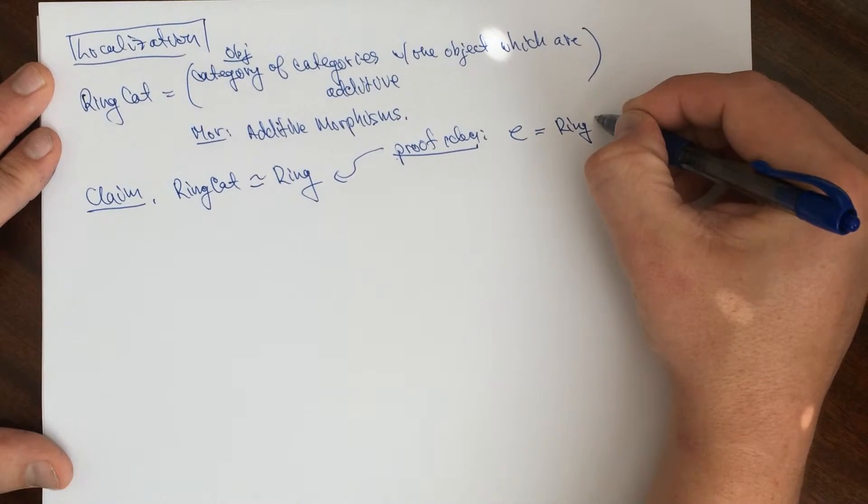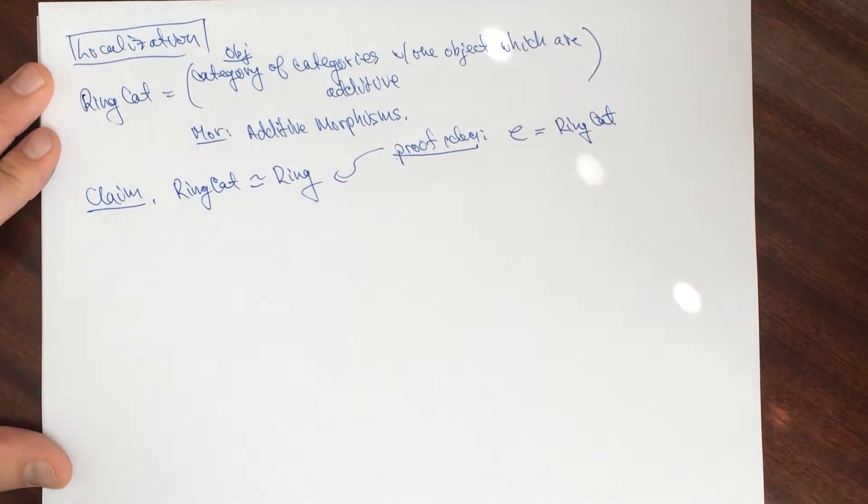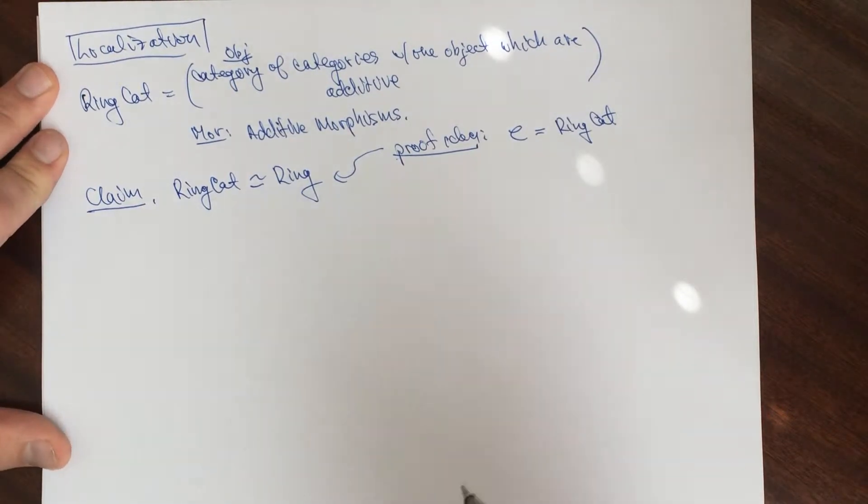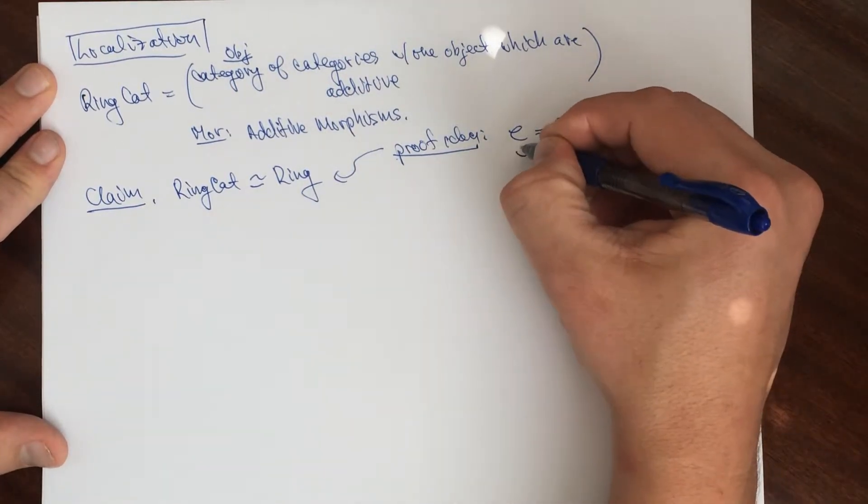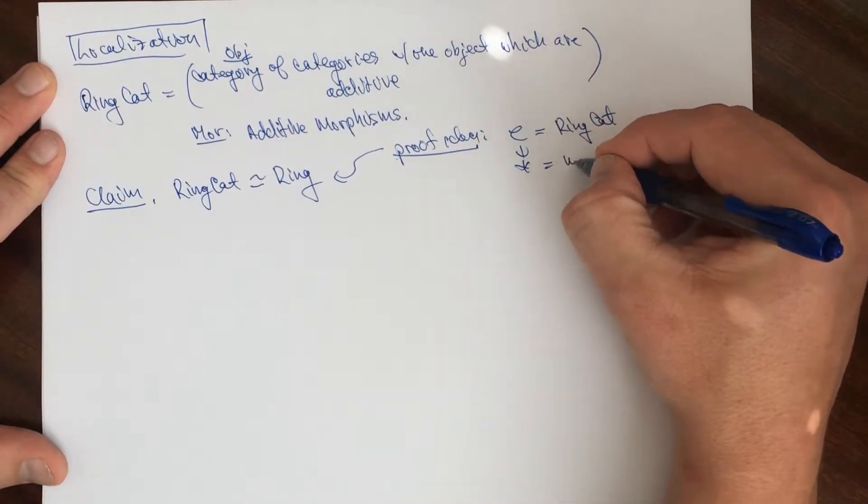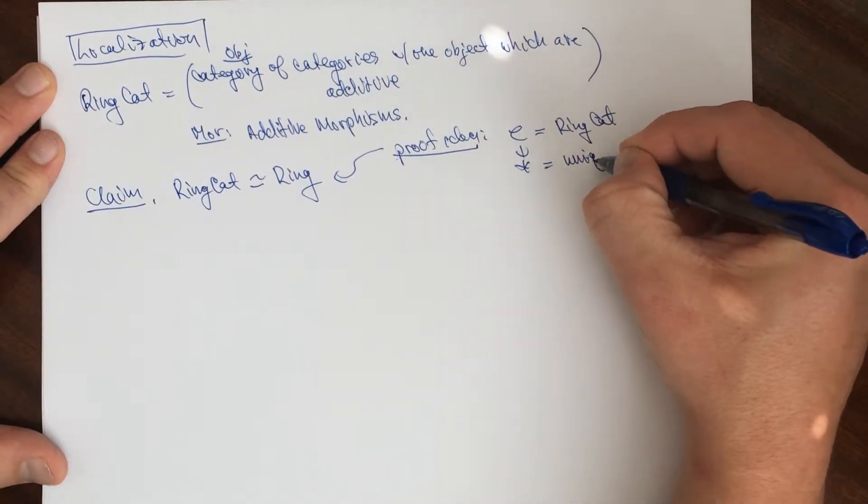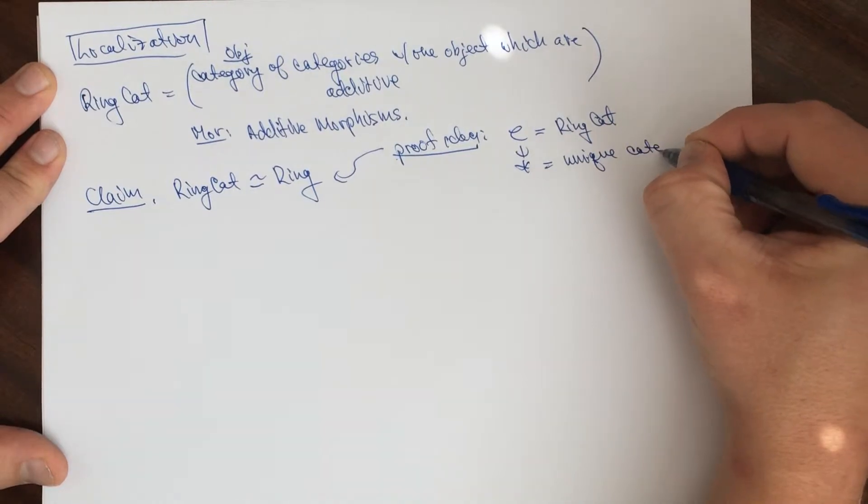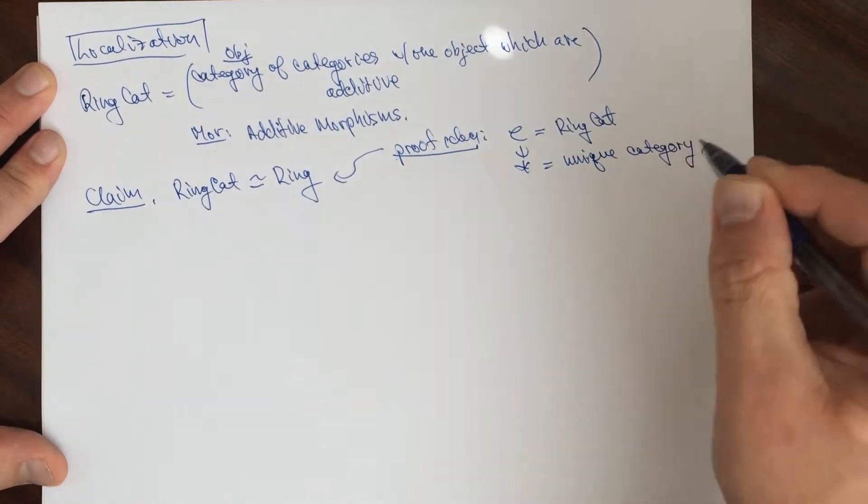This is a category with one object, which is additive. That's it. An additive category with one object. Let's take this thing here to be the unique object. The unique object in the category.